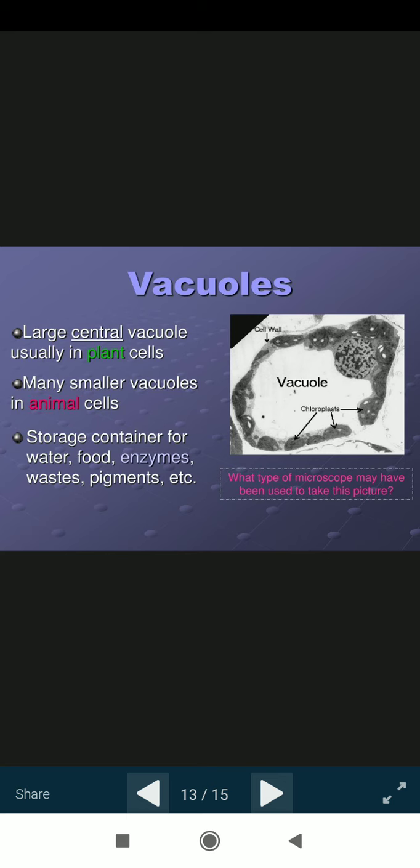Then vacuoles. Large vacuoles, central vacuoles, usually in the plant cells. Many smaller vacuoles in animal cells. Storage container for water, food, enzymes, waste, pigments, etc. The main function of these vacuoles are storing the things like water, food, enzymes, and other things.